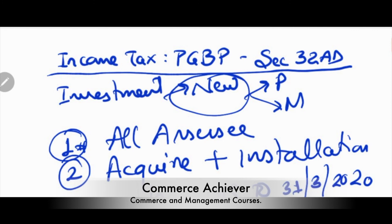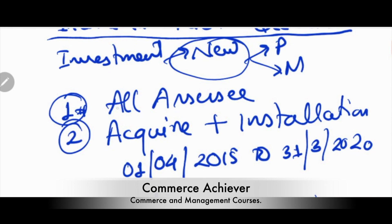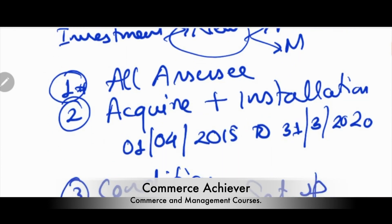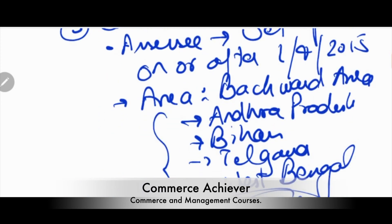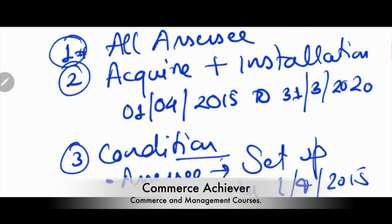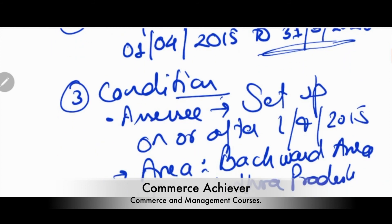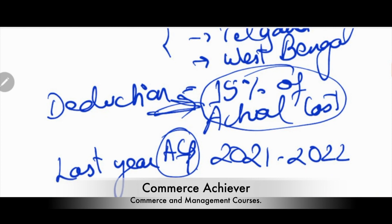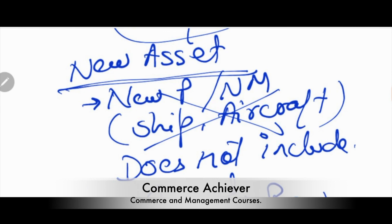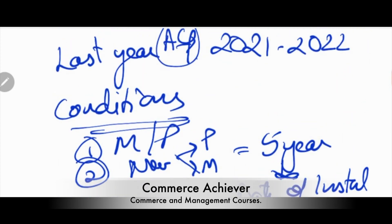Feel the concept as a businessman — you are an SSC individual. This is applicable in some backward areas where plant or machinery is purchased and installed by March 2020, with business setup after 1 April 2015. Then 15% of actual cost is your deduction. Start feeling taxation — it becomes easy over time.